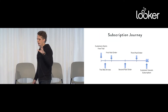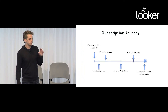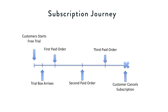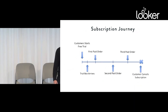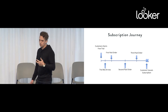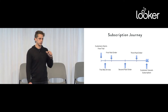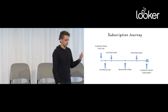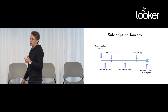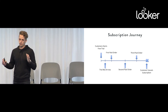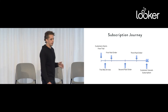So we're going to talk about how we think about analyzing our subscription business. Specifically, what we're interested in is the attributes of customers, the behavior of customers, or the things that we do that influence how long these customers are on subscriptions. A customer might start a free trial, get a trial box, have a series of orders shipped to them over some time, and then eventually cancel their subscription. We want to know which customers are more likely to churn versus less likely to churn, and we want to maximize the length of time between when that free trial starts and when that customer cancels.